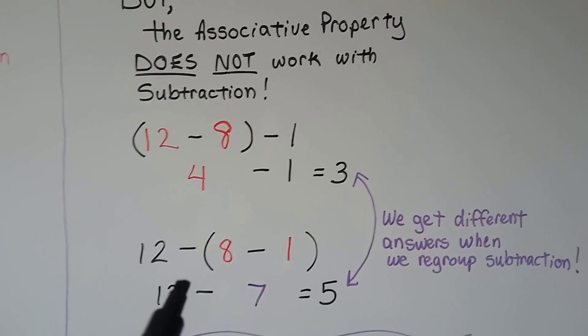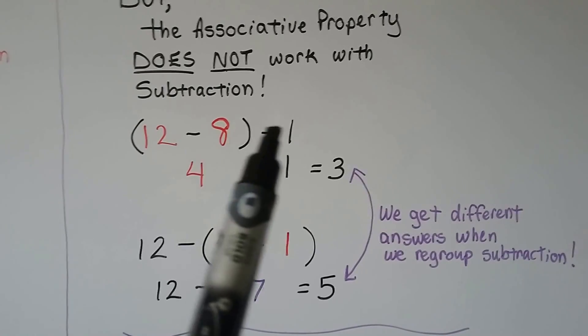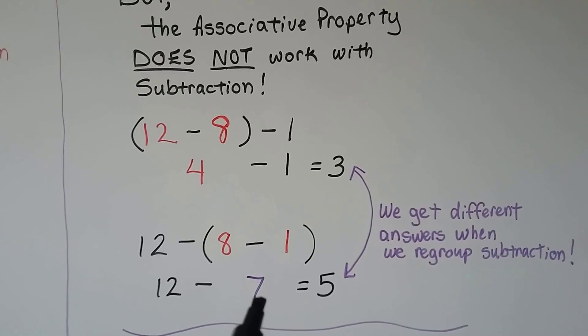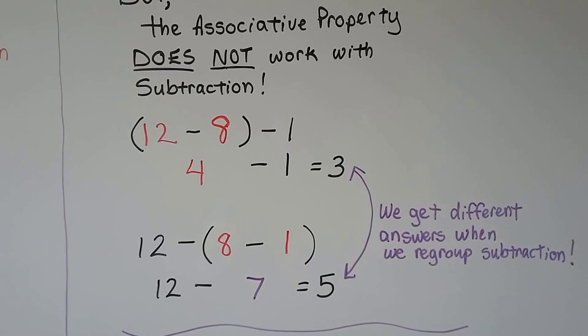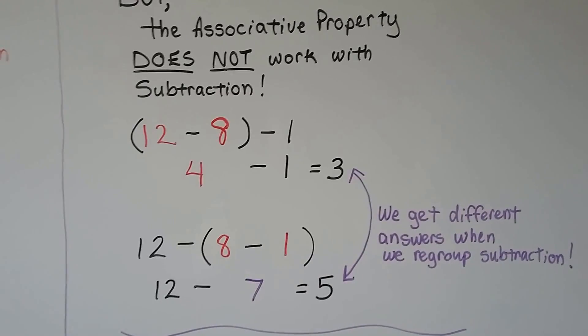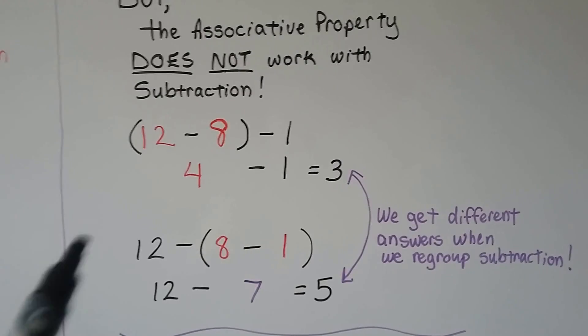If we change the grouping and do 8 minus 1 first, this part, we're going to get a 7. Then when we do 12 minus 7, we're going to get a 5. So we get different answers when we regroup subtraction. So it doesn't work.